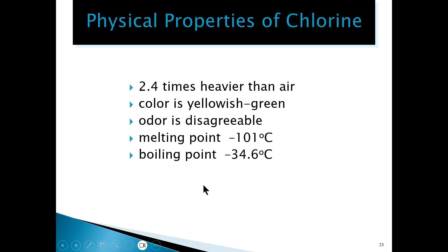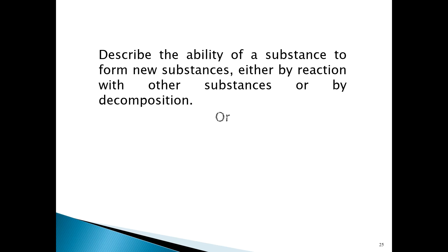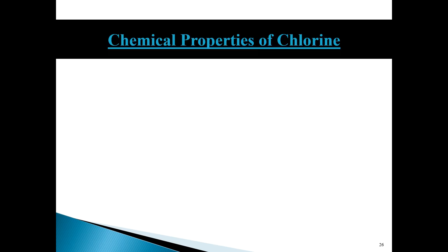Now we move on to chemical properties. A chemical property is any property that can be observed where a chemical reaction is taking place — specifically, properties that when observed involve changing the substance into another substance. So we're making observations about the nature of that chemical change, and that is a characteristic of the substance.